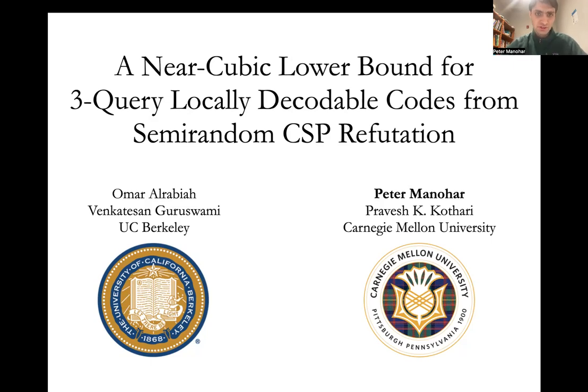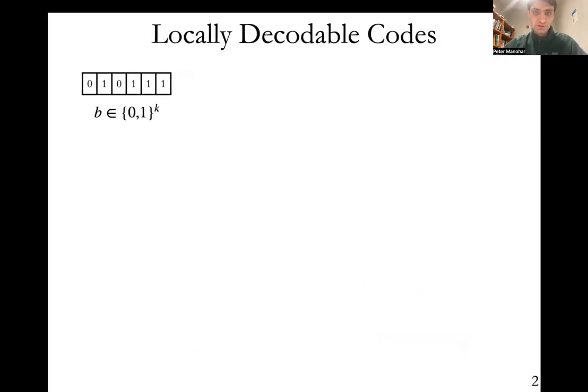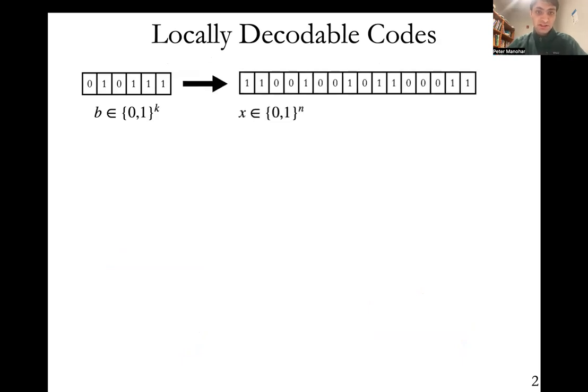I'd like to start by defining locally decodable codes, which is the object we study in our paper. A locally decodable code takes as input a k-bit message b and encodes it as an n-bit string x, such that the n-bit string is locally decodable, as the name implies.